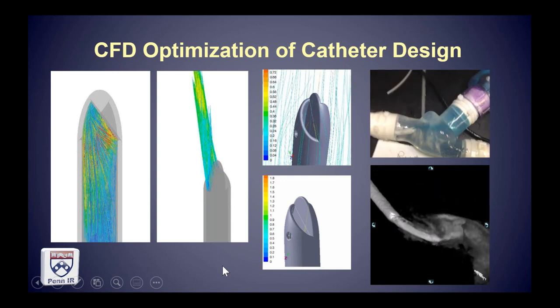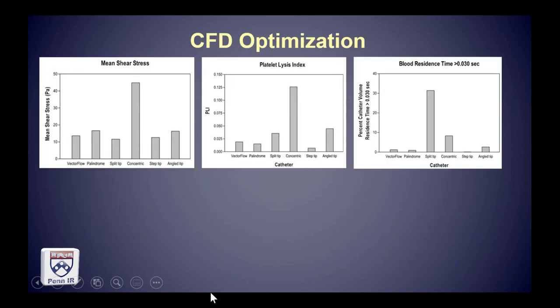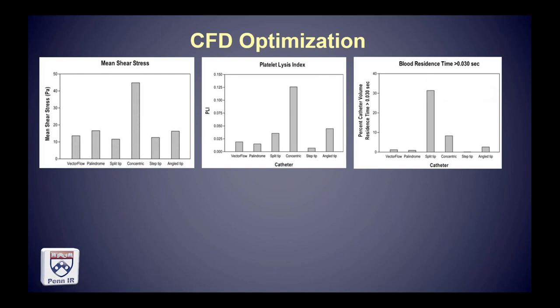This led to parameters used to optimize catheter characteristics. Changing the angle of the flow-deflecting interface of the catheter tip can alter these parameters by huge amounts. We looked at shear stress, the characteristic of causing platelet lysis leading to platelet activation and aggregation, and blood residence time — basically how long blood hangs inside the catheter — which is an independent metric of thrombosis risk. The catheter under development, the so-called vector flow catheter, was highly favorable in all of those parameters through this iterative computational fluid dynamics process.